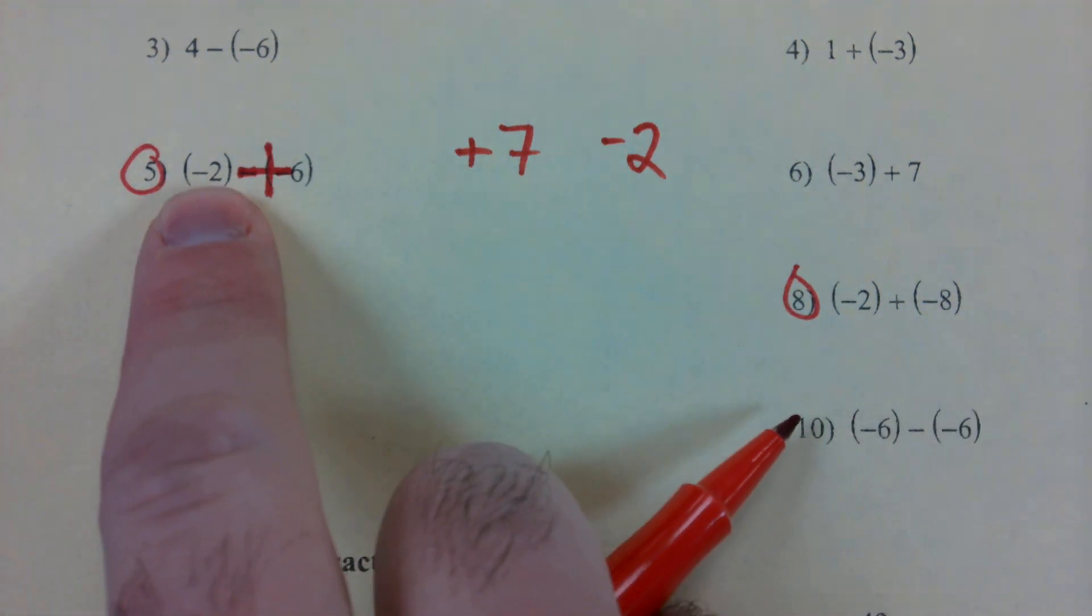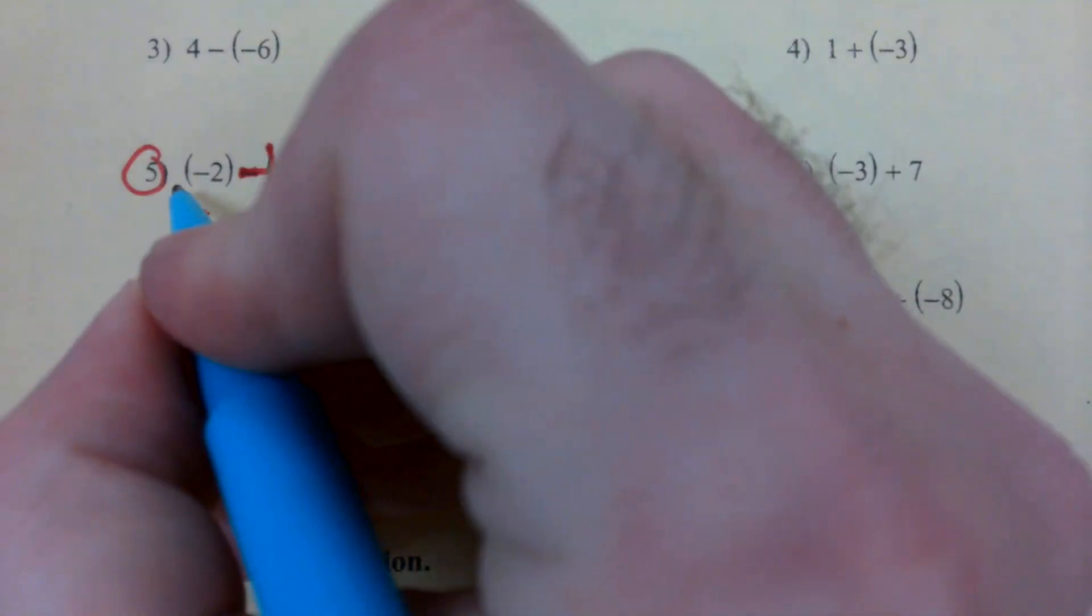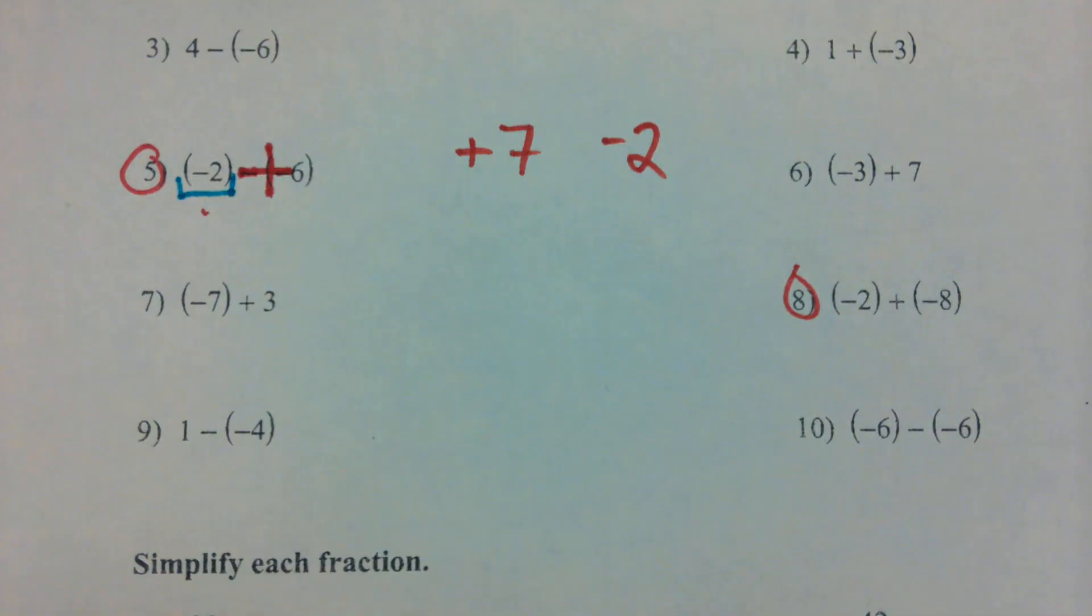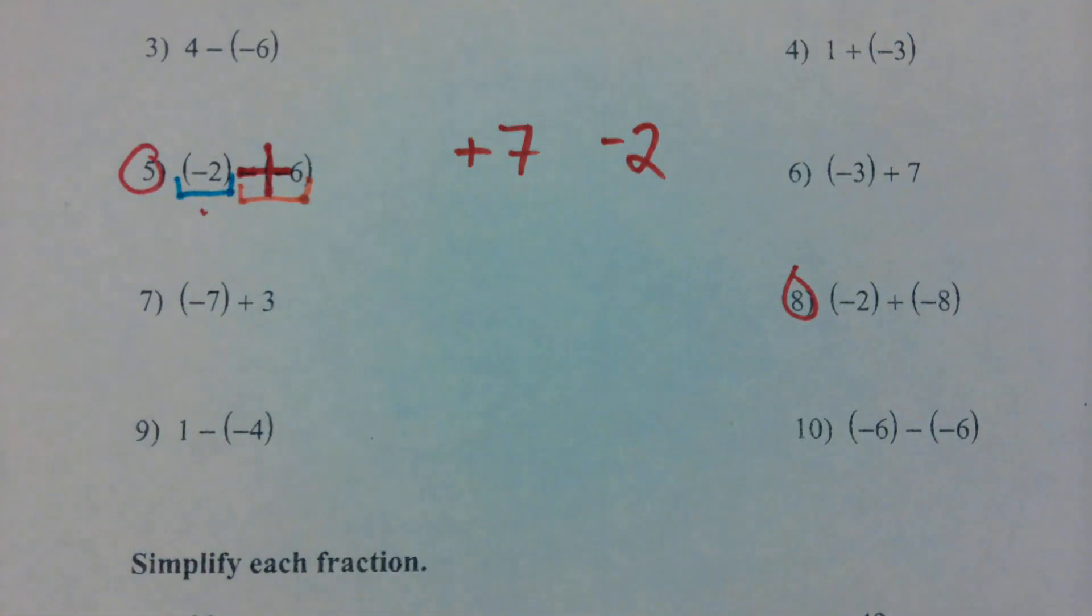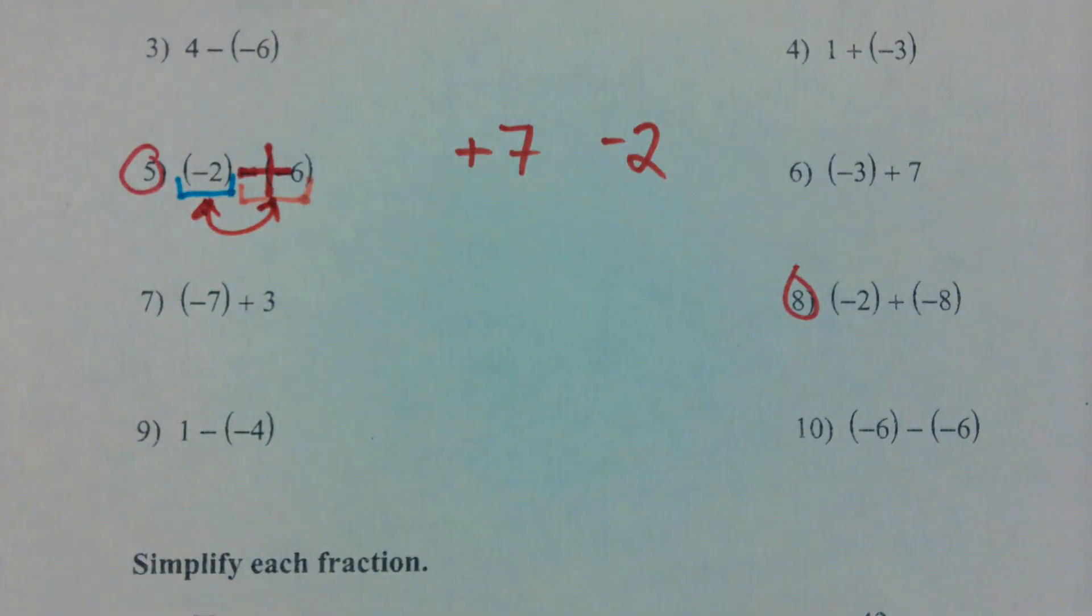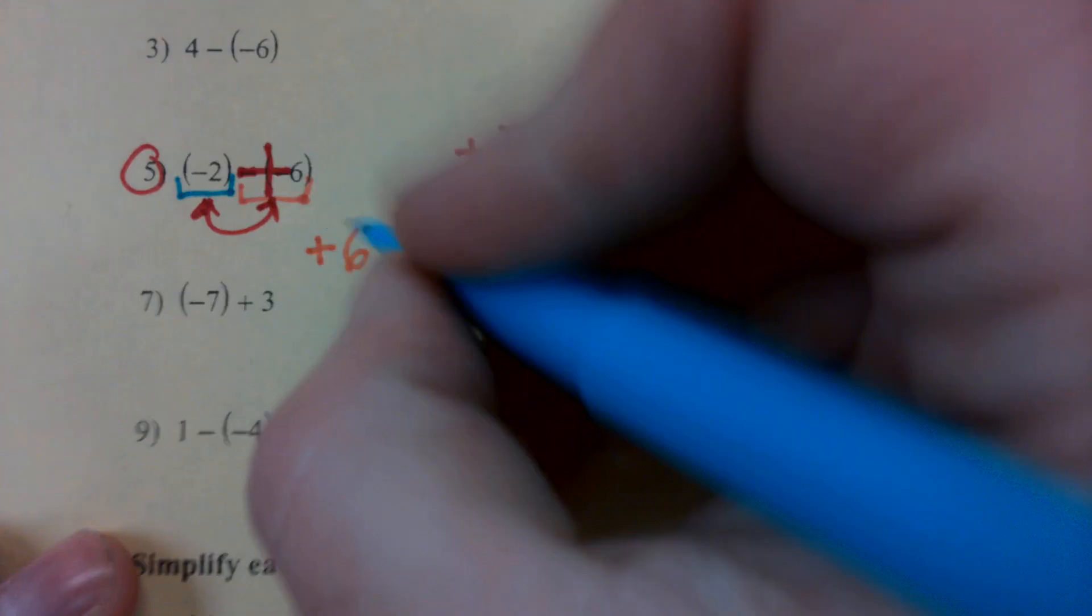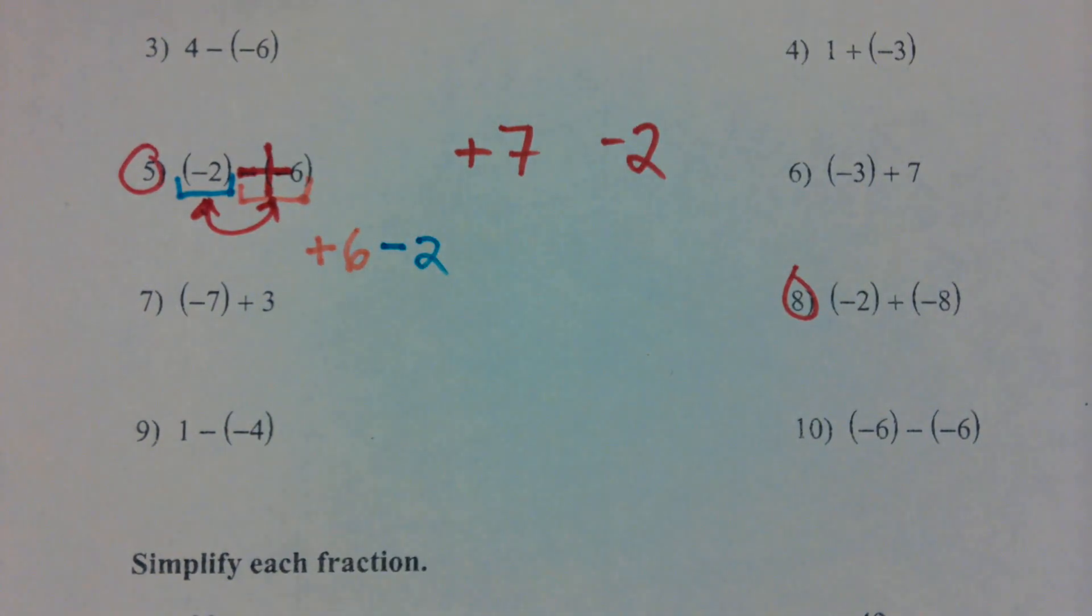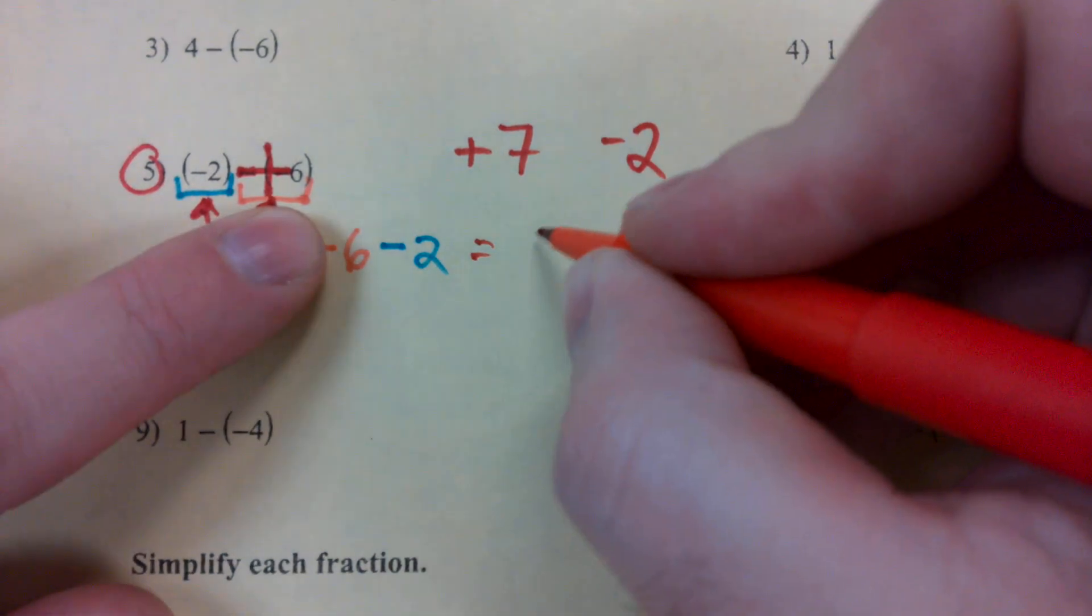So if we have negative two plus six, what we can do is take the sign and the number, and we can take this other sign and number. Minus two and plus six, and we can swap their places. So now what we have is positive six minus two. We don't even need that plus there. And we get a much easier looking expression. Six minus two, which gives us what? Four, right?